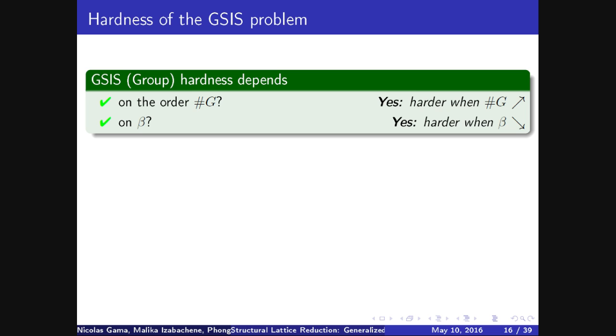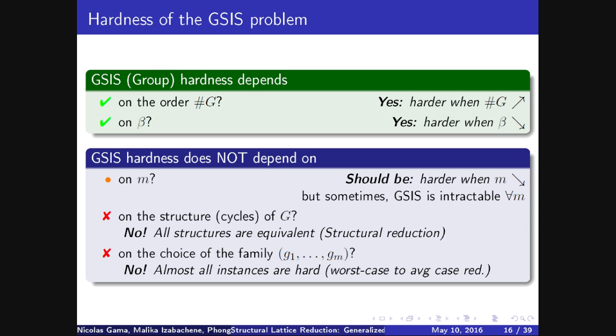So basically, if you want to base a problem on SIS, on what the hardness depends, it depends only on two factors. The first one is the order of G, the hardness increases with it, and the second one is the radius of the expected answers. And basically, the hardness does not depend on anything else. Not M, not the structure of G, not the choice of the family.